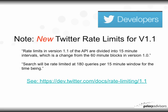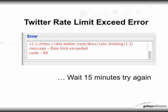A note on Twitter rate limits for API version 1.1: the rate limits are divided into 15-minute intervals, which is a change from the 60-minute blocks in version 1. The search endpoint is rate limited to 180 queries per 15-minute window for the time being — though this is always subject to change. You can see the provided URL for more information about rate limiting. If you hit the rate limit, you'll receive an error message; my advice is to just wait 15 minutes and try again.